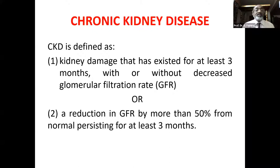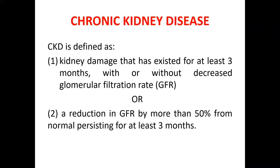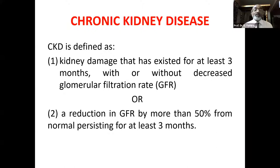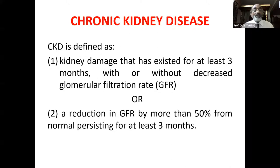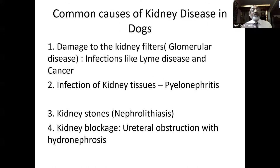Chronic kidney disease is defined as kidney damage that has existed for at least three months, with or without decreased glomerular filtration rate. I stress this point: when you talk of CKD it means there has been a disease process occurring for several months. This could also be described as a reduction in GFR by more than 50 percent from normal, persisting for at least three months.